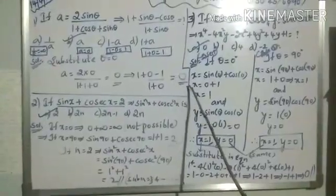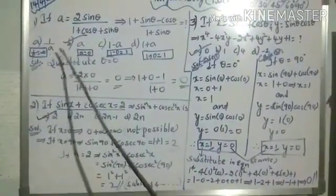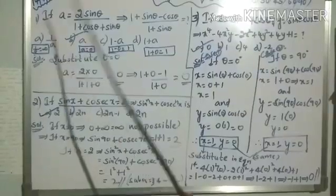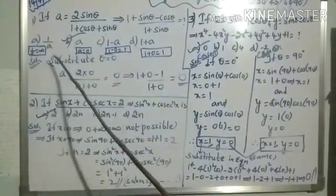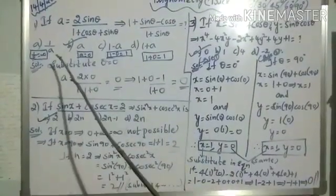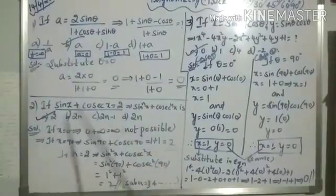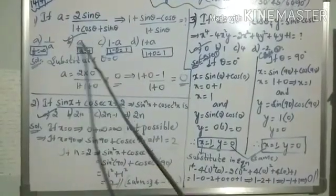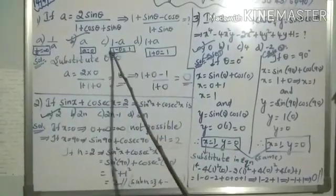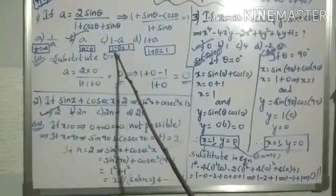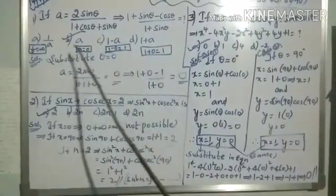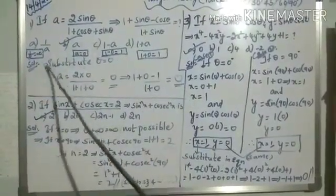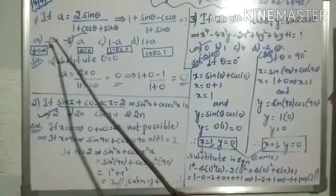If I substitute A = 0 in the first option, there is 1/A. 1 divided by 0 is infinity — anything divided by 0 is infinity. So we should get 0 but we are getting infinity, so this option is wrong. The second option gives just A, and our value is A = 0, so the condition is satisfied. The third option gives 1 − A = 1 − 0 = 1, which is wrong. The fourth option gives 1 + A = 1, also wrong. So B is our right answer.